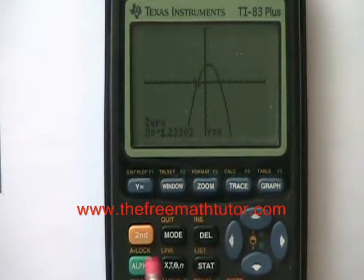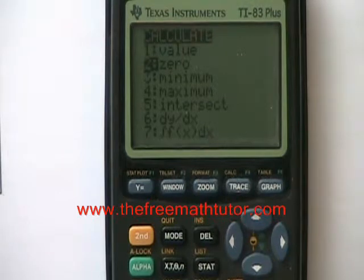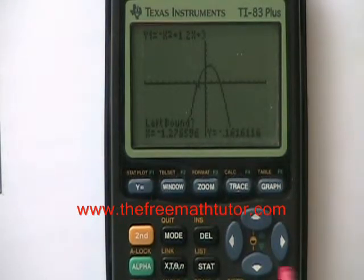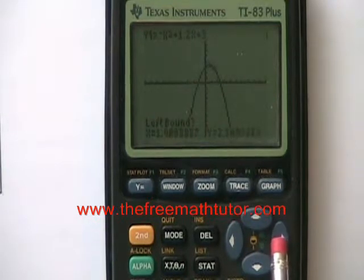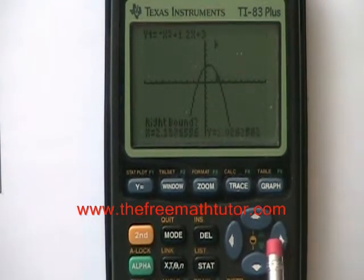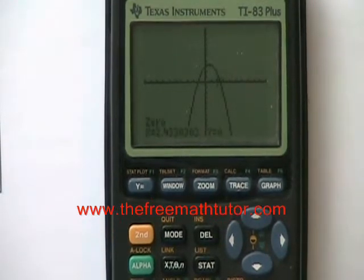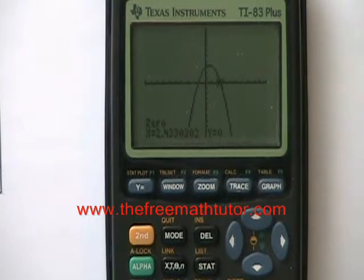To find the right root, I do 2nd TRACE again, choose zero again, ENTER. Move the cursor just to the left of the second root, hit ENTER. Move it again to the right of the second root, hit ENTER, and hit ENTER again. And I find another zero at 2.433.